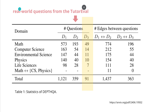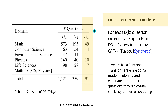So we have all this beautiful textbook mathematics, physics, and real-world questions from the Princeton TutorEval dataset. They take the D3 questions and know all the related questions from the textbook, and how the solution path goes forward. They decided to go from the TutorEval dataset with 91 D3 questions, distributed across math, computer science, and other fields. Then they started to deconstruct these questions.